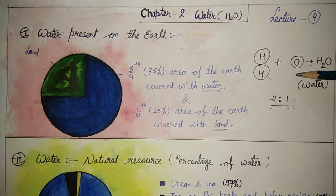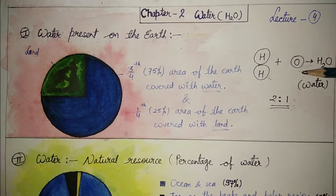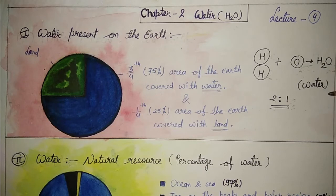Water is a compound of two gases — hydrogen and oxygen — in the ratio 2:1, which means two atoms of hydrogen combined with one atom of oxygen forms water. It is also called dihydrogen oxide. Its properties are: water is tasteless, odorless, colorless, and it is always found in liquid state at normal temperature.